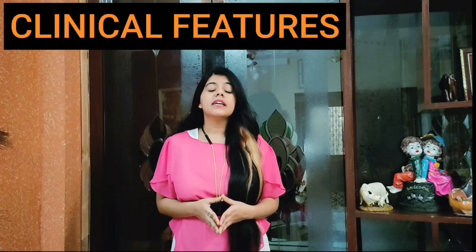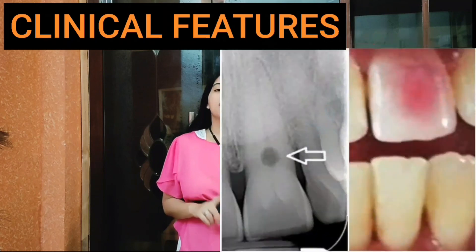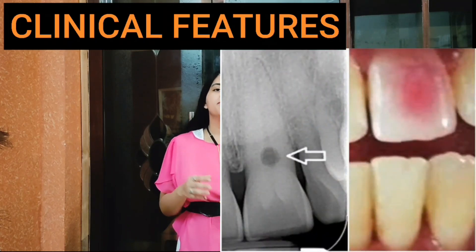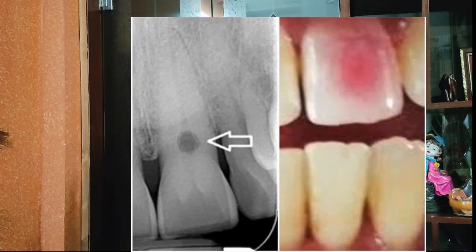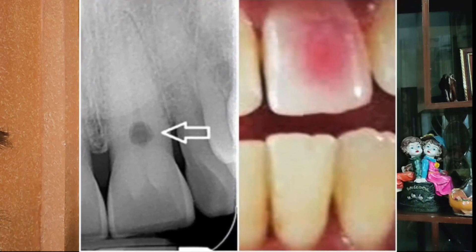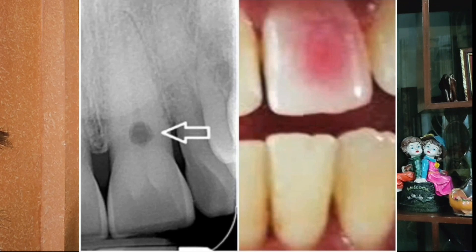Regarding clinical features, internal resorption is seen in incisors, cuspids, bicuspids, and even molars. There is an appearance of a pink hue in the center of the tooth, reflecting through the remaining tooth structure and present in the crown. As you can see on the screen, the pink hue is visible in the crown portion of the tooth, reflecting the pink color from the remaining tooth structure.